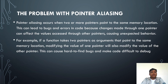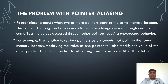Now let's see what problems arise with pointer aliasing. Pointer aliasing occurs when two or more pointers point to the same memory location. This can lead to bugs and errors in the code because changes made through one pointer can affect the value accessed through another pointer, causing unexpected behavior.